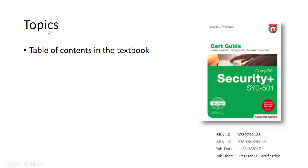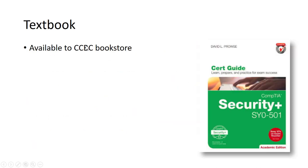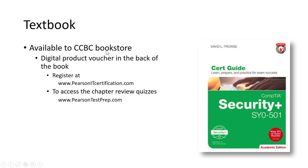Now let's look at the topics we will be covering. Looking at the table of contents in our textbook, we have 18 chapters — from computer systems security, to operating systems hardening, to application security, to physical security, to access control methods, all the way to policies and procedures. The textbook is available at the CCBC bookstore, and it's important to buy it because it contains the digital product voucher in the back. You use that to register with PearsonITcertification.com and then access the chapter review quizzes on pearsontestprep.com.